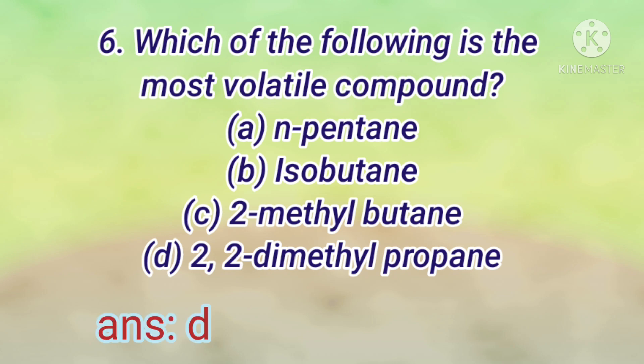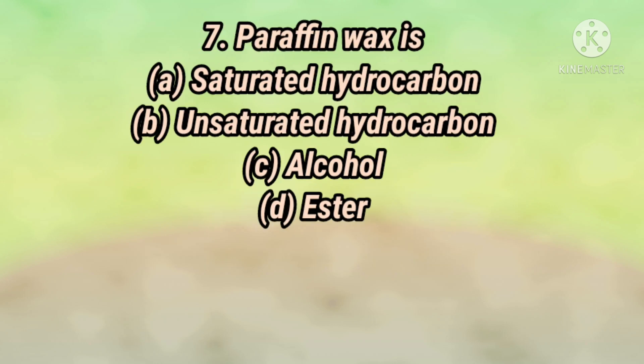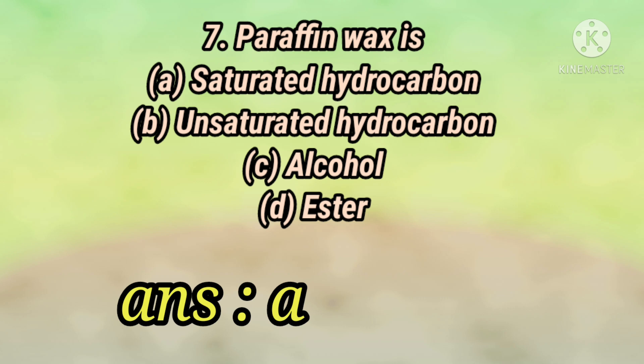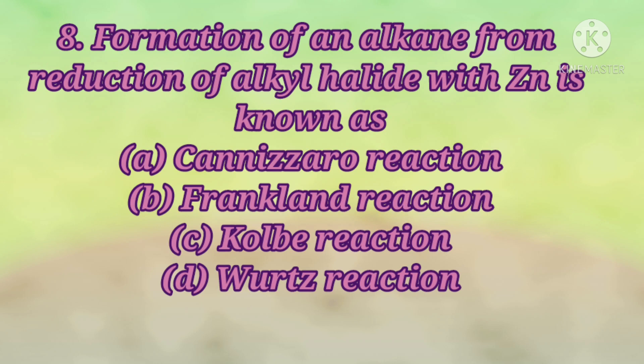Which of the following is the most volatile compound? Answer: D — 2,2-dimethylpropane. Paraffin wax is answer A — it's a saturated hydrocarbon. Formation of an alkane from reduction of alkyl halide with zinc is known as B — Frankland reaction.